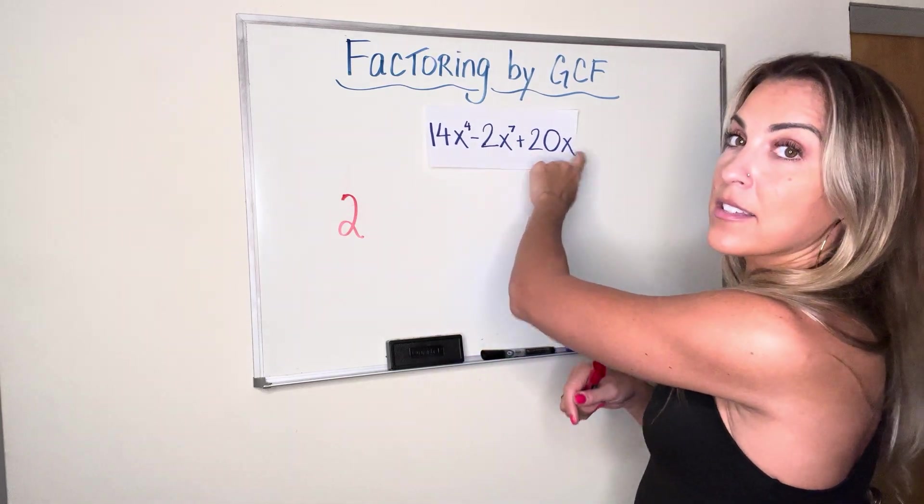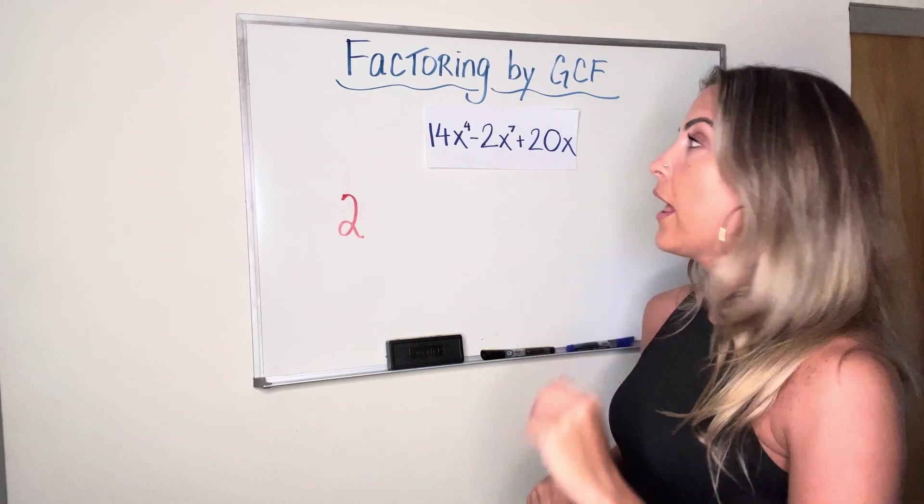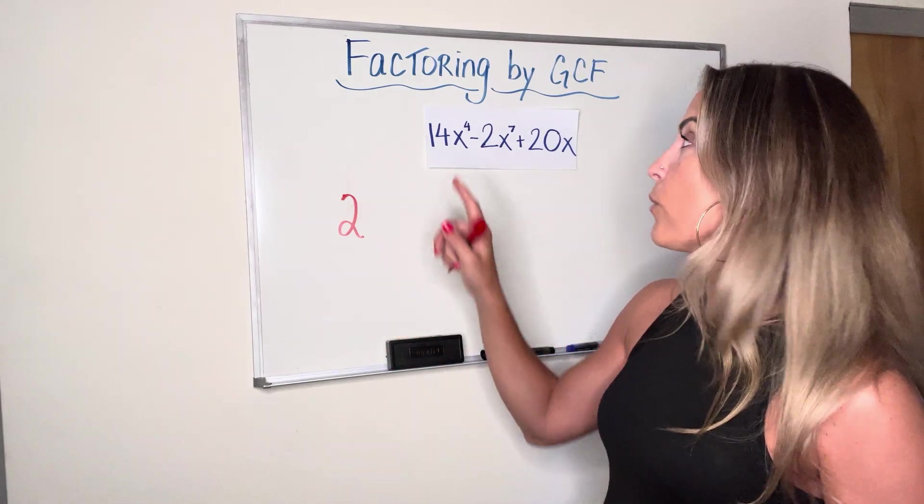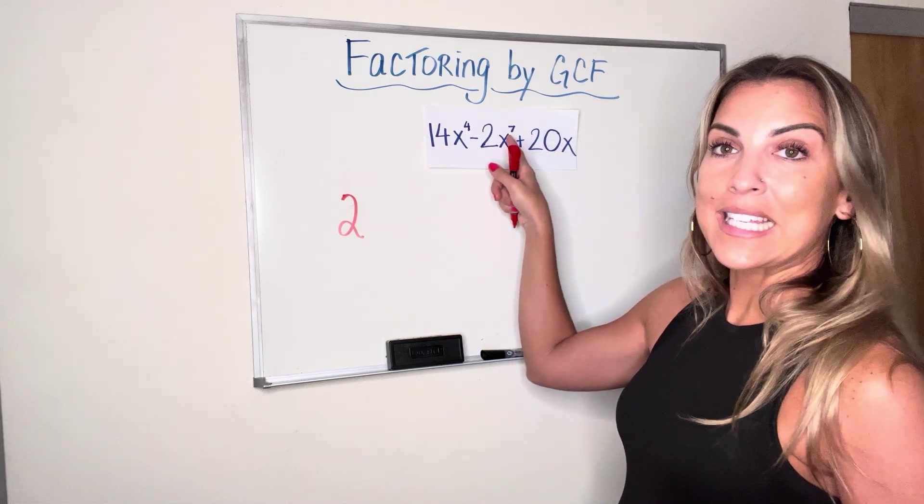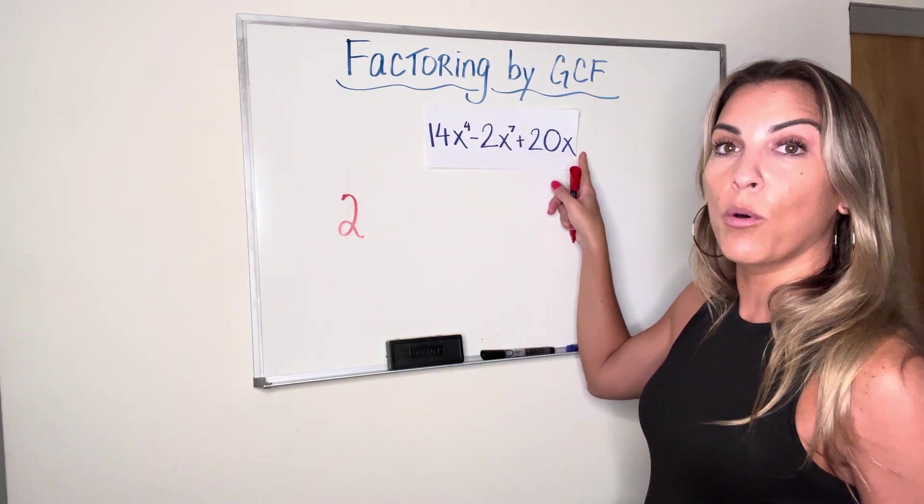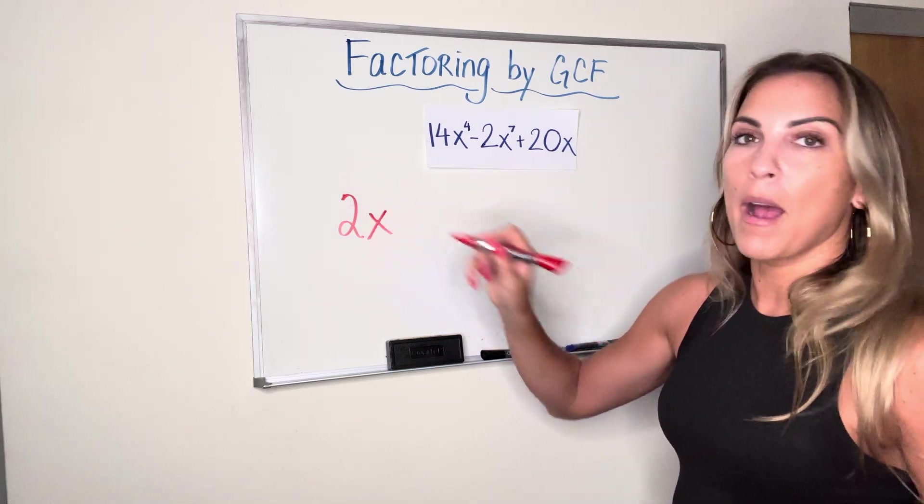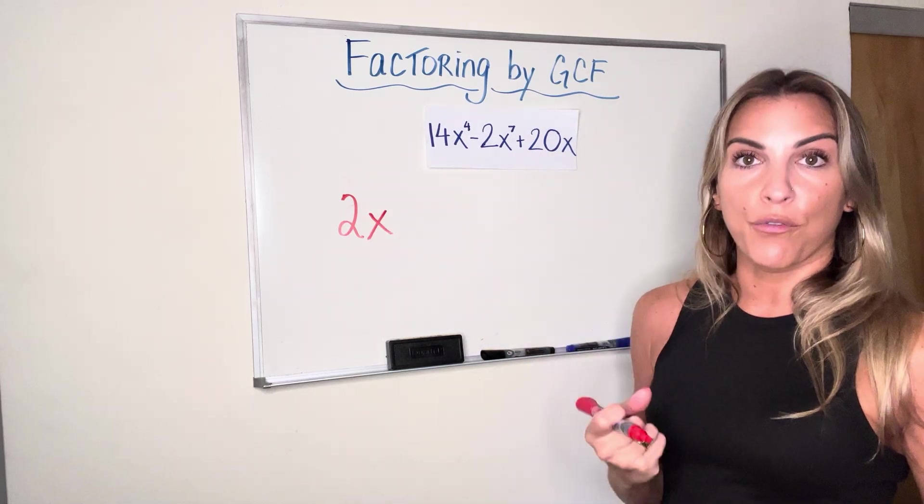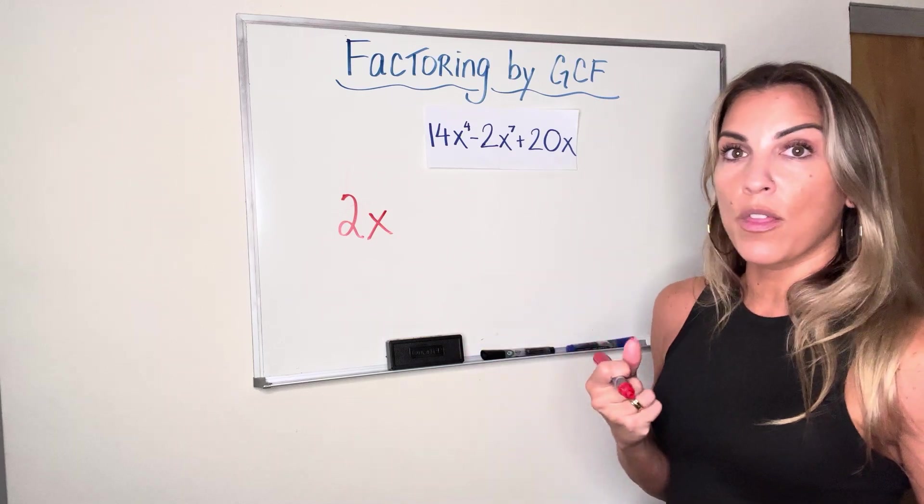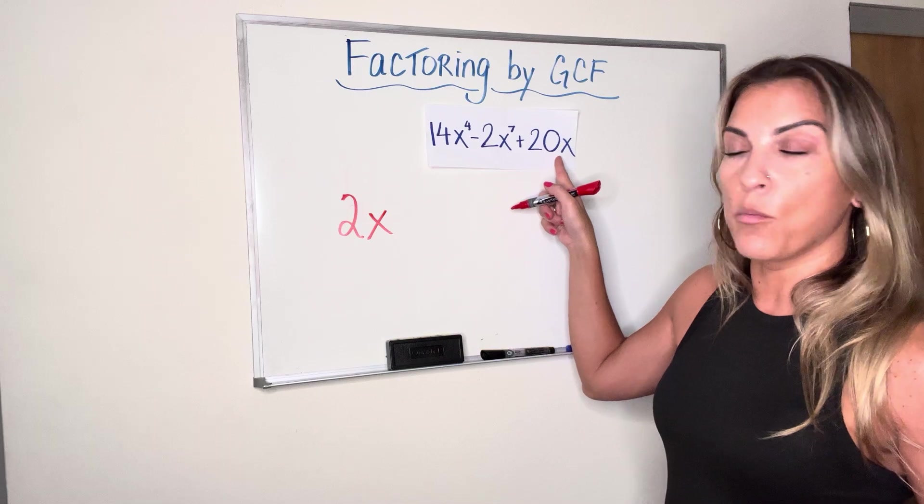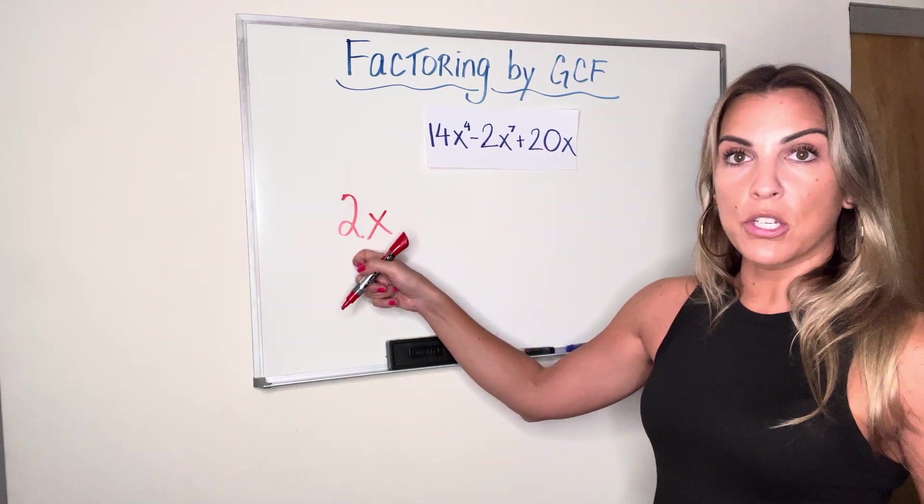Now let's look at the variables and see if any variable can be part of our GCF. Every term has an X. So that means that it can be part of it. And now remember the shortcut that I said was just take the smallest exponent. So we have x to the fourth, we have x to the seventh, and we have x to the invisible one. So that is the smallest one. That is the maximum amount of X's that I can take out as a factor. I can't take out any more than that because that third term only has one X there. I can't take out any more than that. So 2x is my GCF.